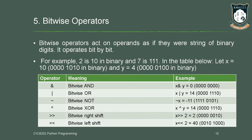In bitwise AND, if both values are 1 you get the result as 1. If any one value is different, it returns 0. The bitwise operators are: bitwise AND, bitwise OR, bitwise NOT, bitwise XOR, bitwise right shift, and bitwise left shift.